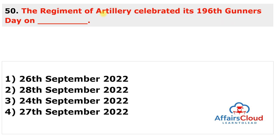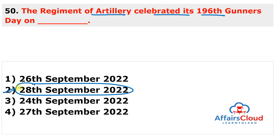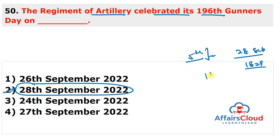The Regiment of Artillery celebrated its 196th Gunners Day on 28th September 2022 to commemorate the raising of the 5th or Bombay Mountain Battery, the 1st Indian Artillery Unit, on 28th September 1827.